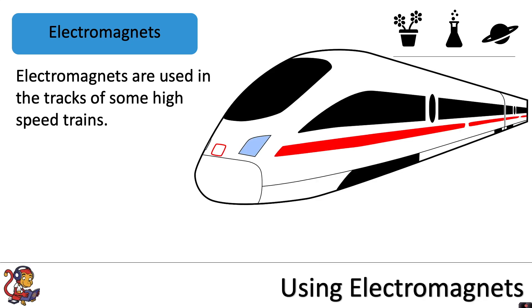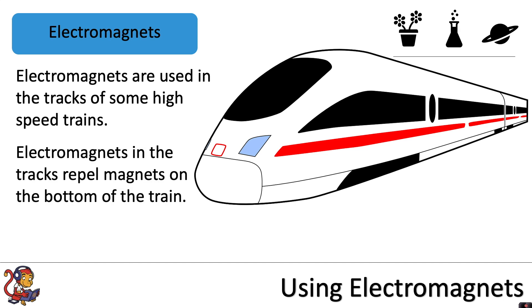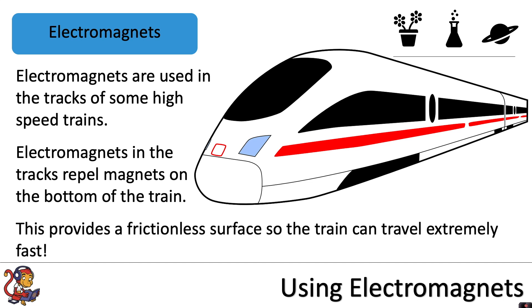Electromagnets are used in the tracks of some high-speed trains. Electromagnets in the tracks repel magnets on the bottom of the train. This provides a frictionless surface so the train can travel extremely fast.